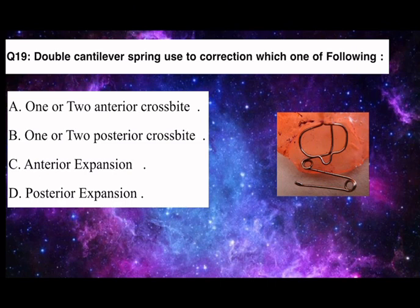Q19. Double cantilever spring is used to correct which one of the following? A. One or two anterior crossbites. B. One or two posterior crossbites. C. Anterior expansion. D. Posterior expansion.